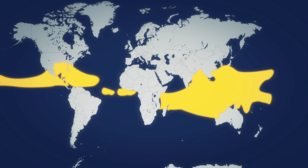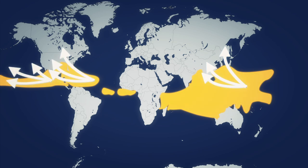When a storm cluster occurs in the Northwest Pacific Ocean west of the Dateline, it is called a typhoon. The same kind of storm is called a hurricane in the North Atlantic Ocean or the Northeast Pacific Ocean on the eastern side of the Dateline. In other parts of the world, it is called a cyclone.